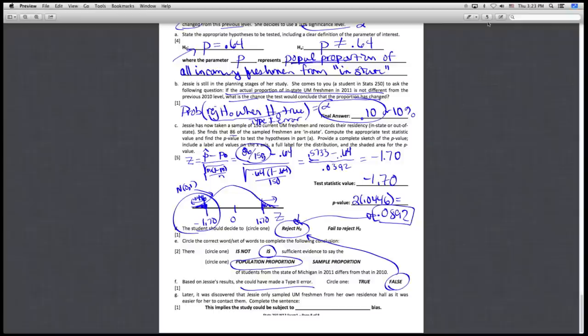Later it was found out that she actually went to the U of M freshmen that are in her own residence hall instead of taking a true random sample from all U of M freshmen, because they were easier to be contacted. If that were the case, our study is subject to which type of bias? We had three main types of bias: response, non-response, and selection bias. It's not whether they responded or didn't respond. It's the fact that she took her sample in this more convenient way, which happens to be a selection bias that would be introduced into the study.